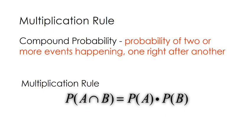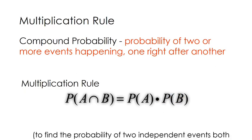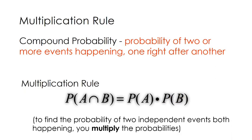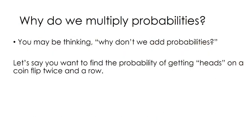You want to write this down. Basically what this is saying is that to find the probability of two events happening, we're going to multiply the probability of the first event times the probability of the second event. Now you might be thinking to yourself, why do we multiply? Maybe intuitively you're thinking why don't we add? I've got an example that I think will help us understand why adding is not a good route to take.